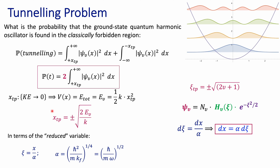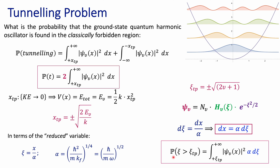If we're going to be changing our variable of integration from x into the reduced coordinate chi, we need to make sure that we are also changing dx into d chi. From the definition of chi with respect to x, we get that dx is equal to alpha d chi. That's very important because now I can calculate the probability that my oscillator extends beyond the turning point in terms of the reduced coordinate — including alpha times d chi instead of the original x variable — and change the interval of integration accordingly, expressing the wave function in terms of chi.